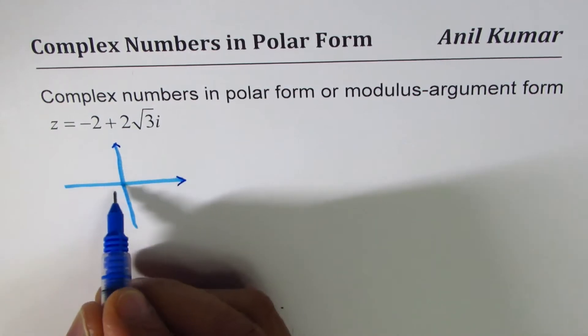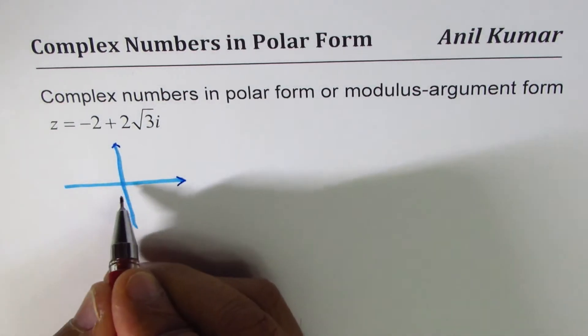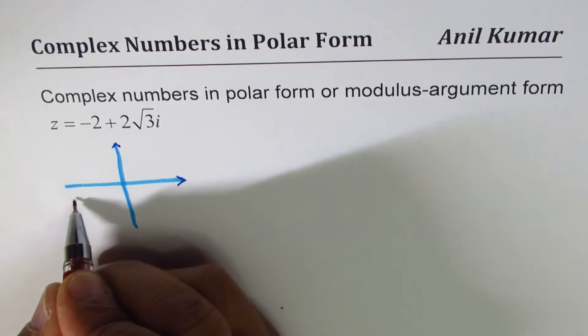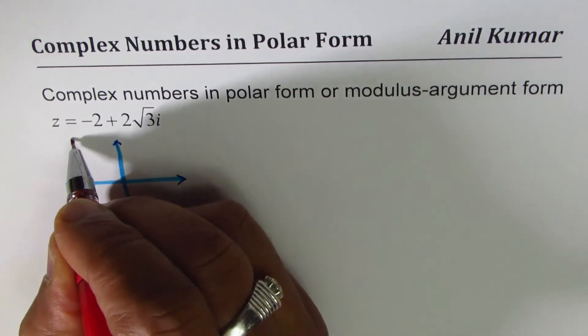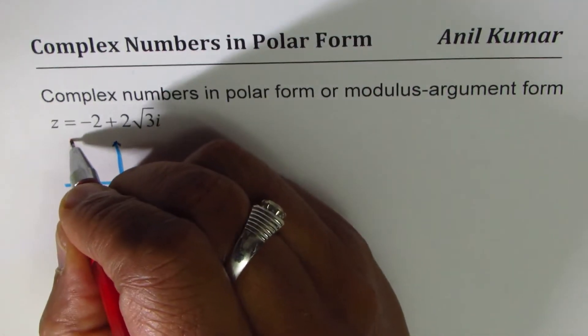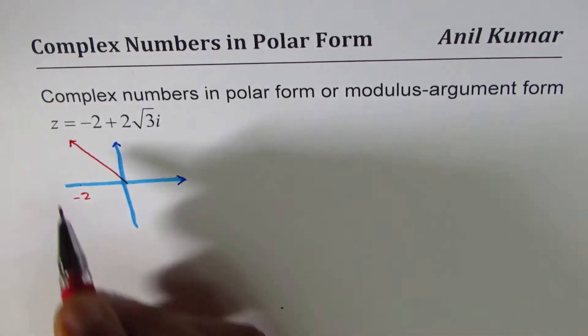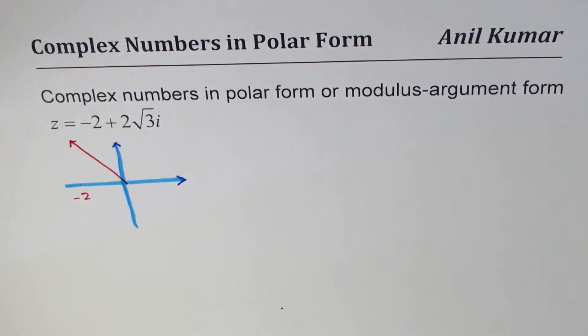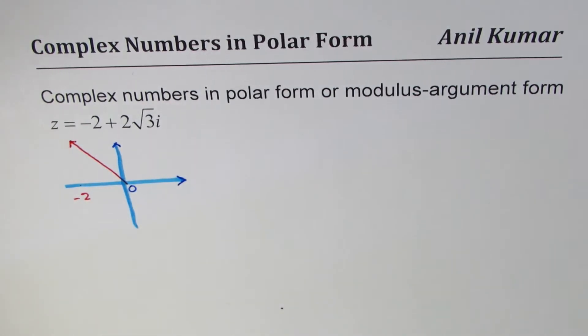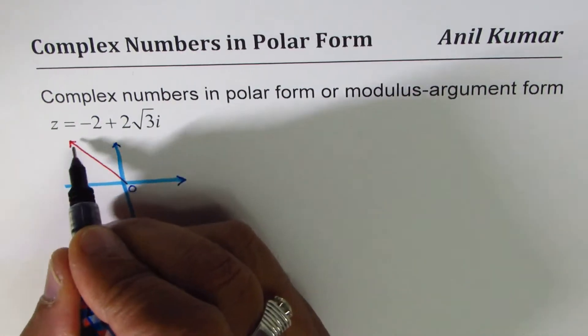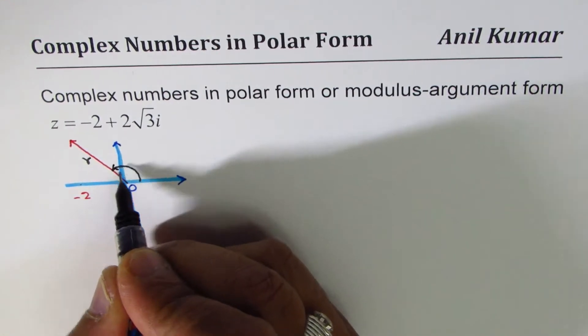Minus 2 means towards the left side, let's say this is minus 2 for us, and 2 square root 3 will be somewhere there. So we can say that the complex number that is z, from the origin that becomes the complex number. Let us say that this distance is r and the angle is theta.